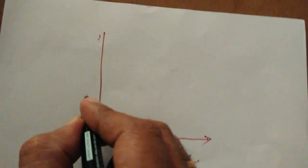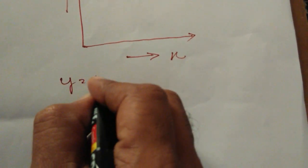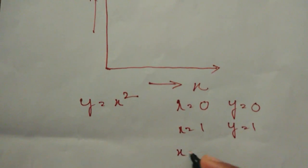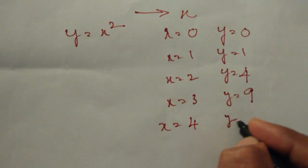Let us study this with the help of a curve. Let me plot a graph — this is x and this is y. The relation we have chosen is y is equal to x square. When x is 0, y is 0; x is 1, y is 1; x is 2, y is 4; x is 3, y is 9; x is 4, y is 16, and so on.